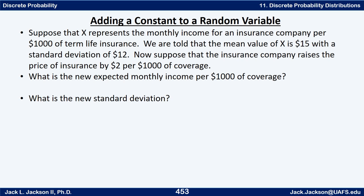Let's apply this to a real-world example. Suppose x represents the monthly income for an insurance company per thousand dollars of term life insurance, with mean $15 and standard deviation $12. If the company raises the price by $2 per thousand dollars of coverage, the new mean is 15 plus 2 equals $17, and the new standard deviation remains $12 — shifting does not change the spread, only the center.